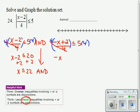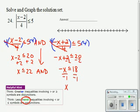And then those 4s are going to cross out. I'm going to have negative x plus 2 is less than or equal to 20. Subtract 2 on each side. So negative x is less than or equal to 18. Divide each side by negative 1. And when you divide by a negative, you've got to reverse the symbol. So then my answer is x is less than or equal to 22, and x is greater than or equal to negative 18.